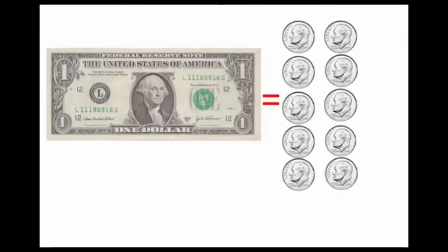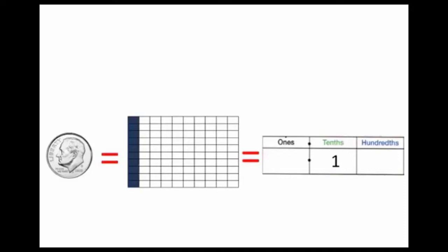Now, a dollar is equivalent to ten dimes. That means that each of those dimes represent one-tenth of a dollar. One in ten pieces. Ten dimes make up a dollar. Again, I have a dime, and a dime is equivalent to ten pieces or one of the ten columns, which is equivalent to one in the tenths place on the place value chart.